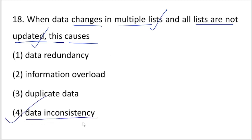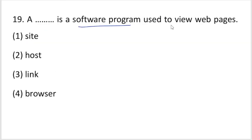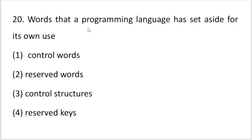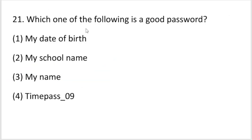A browser is software used to view web pages. To visit web pages and websites, you use a browser. Next question: A programming language has set aside for its own use words - these are called reserved words. That's the right answer.